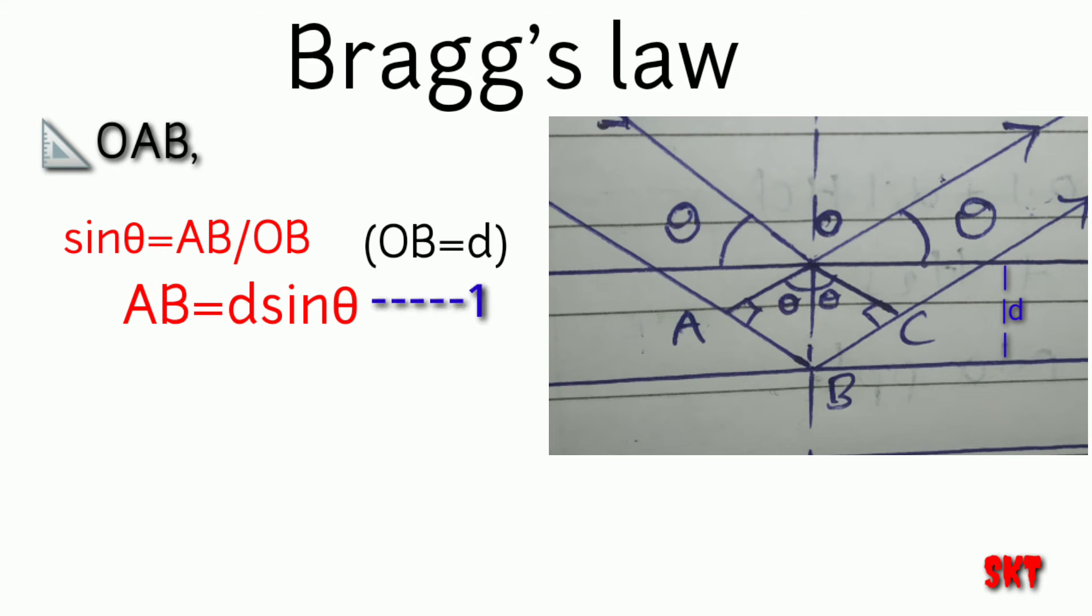Take it as equation 1. Now take another triangle OBC even in that sin theta is equal to BC divided by OB. We know that OB is equal to D so BC becomes D sin theta.